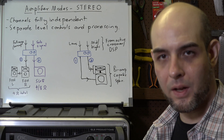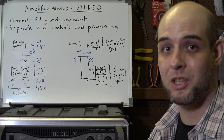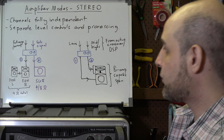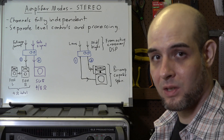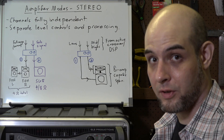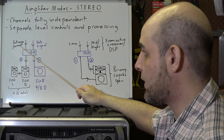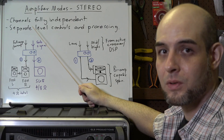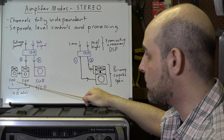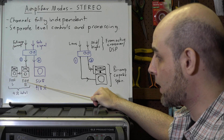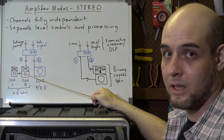Now let's discuss two other stereo mode configurations that are most definitely not stereo. The first is to use one channel to run your full range speakers and the other channel to run your subwoofer. Channel one is fed a full range signal and powers both front of house left and right, which are daisy chained together in mono.